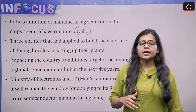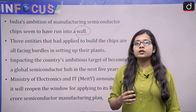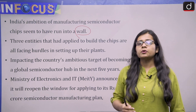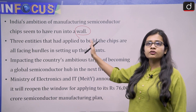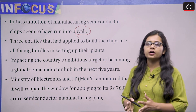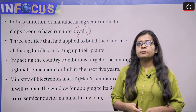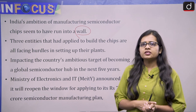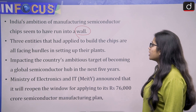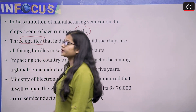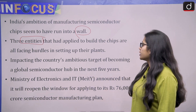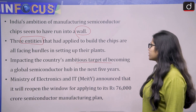India's ambition of manufacturing semiconductor chips seems to have run into a wall. Projects within India about semiconductor manufacturing — which were about to give a boost to India's efforts — are seeing hurdles. In the coming months these initiatives are not going to start; they are facing hurdles such as lack of proper technology, bureaucratic hurdles, and capital investment issues. Three entities that had applied to build chips are all facing hurdles in setting up their plants.